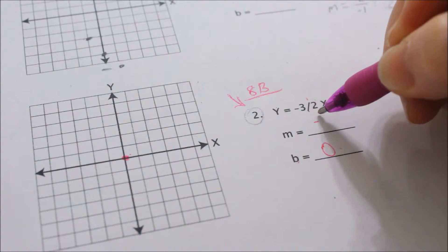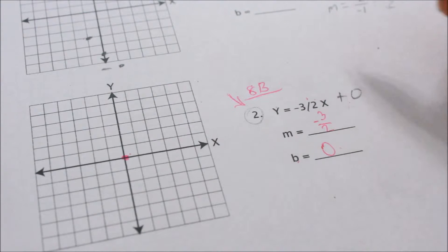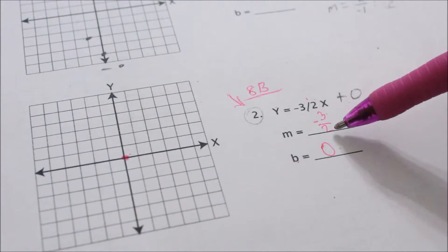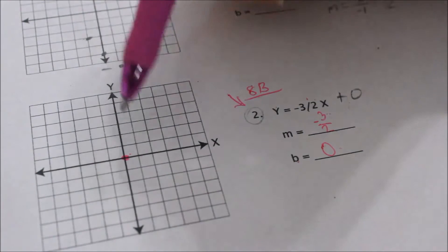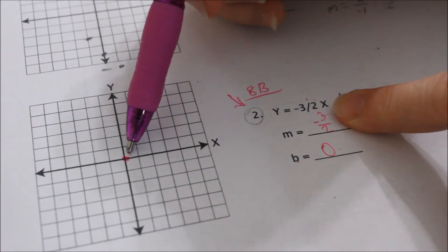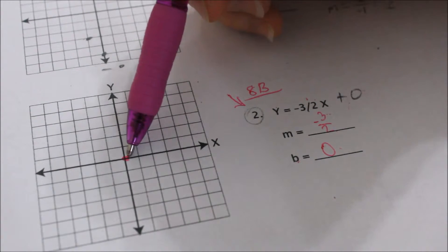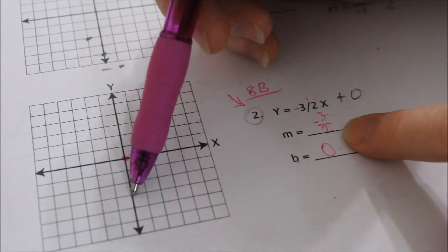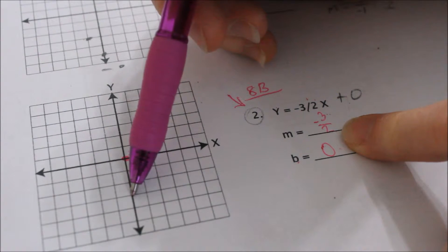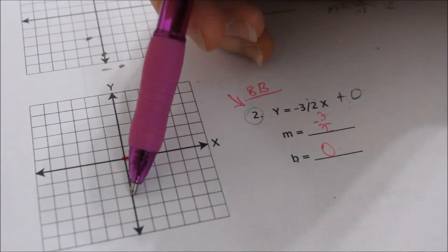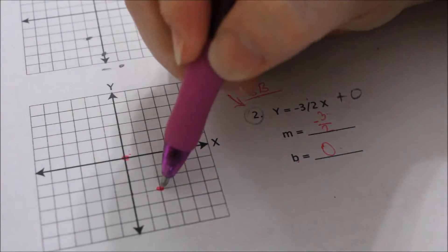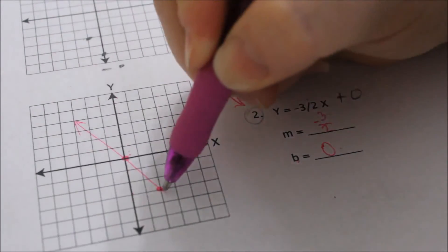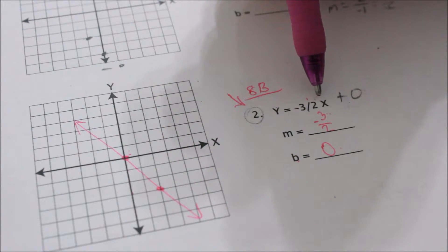Slope is rise over run — I usually count my rise first. Starting at your y-intercept, our rise is negative 3. Negative means you go in the down direction. So starting at my y-intercept, I count down 3: 1, 2, 3. My run is a positive 2 — positive is in the right direction. So I count over to the right 1, 2, and that's where my second point gets drawn. Now I've got two points to be able to make my line. This is the line for the equation of y equals negative 3 halves x.